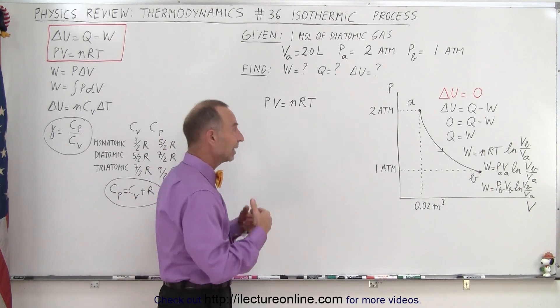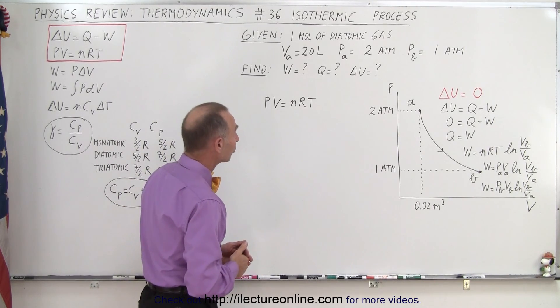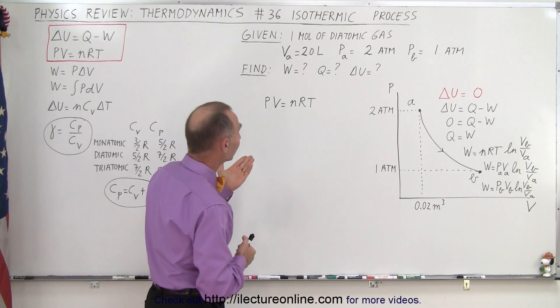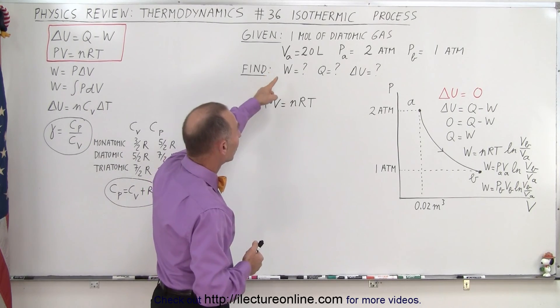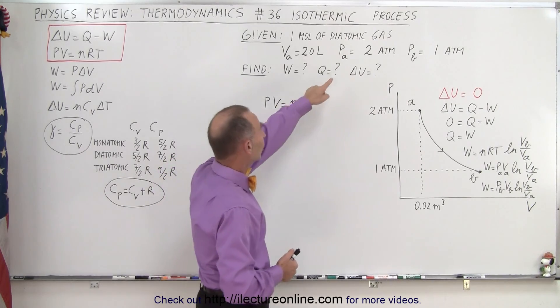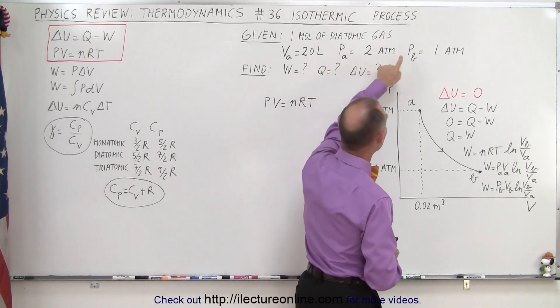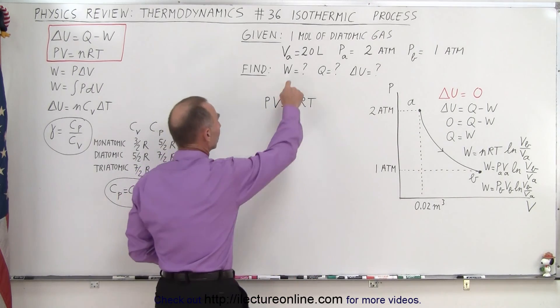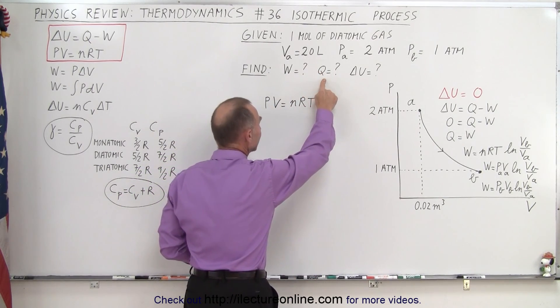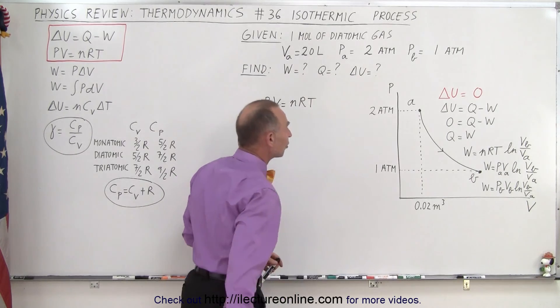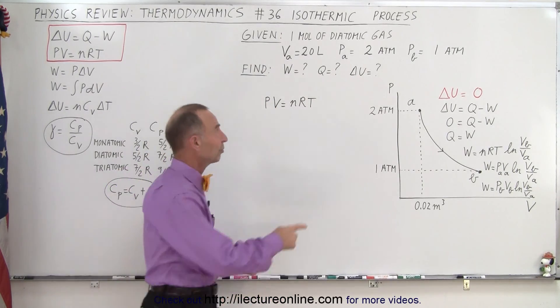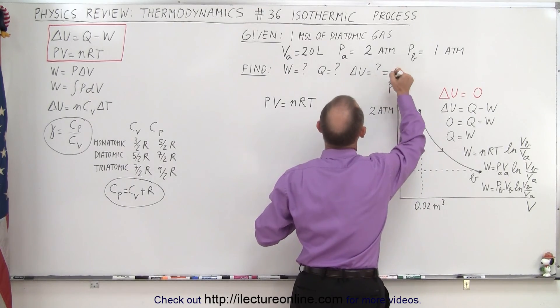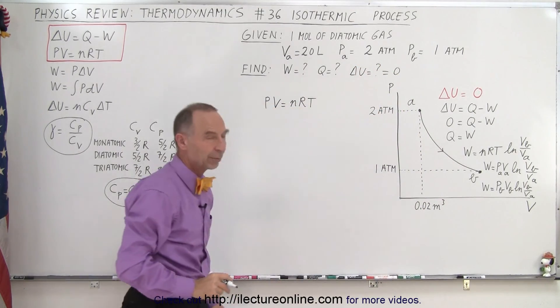So starting with one mole of diatomic gas, a volume of 20 liters to begin with, we don't know the final volume. We know the pressure in the beginning and the pressure at the end. So the question always is: how much work is done by the gas? What is the heat added to the gas? And what is the change in internal energy? Of course, this part is already done. We know that this must be equal to zero because we're dealing with an isothermic process.